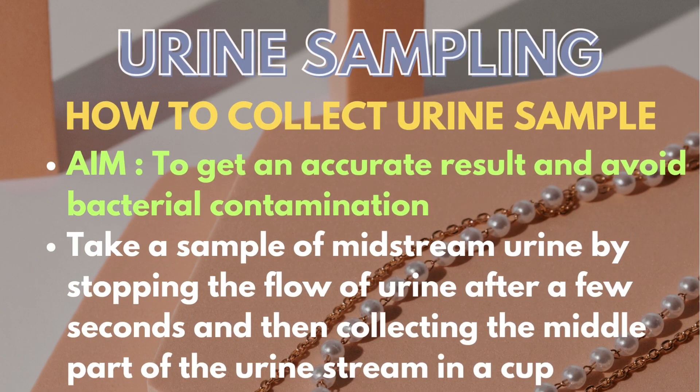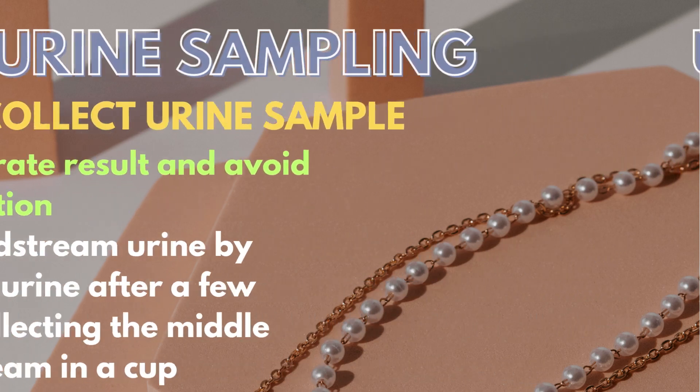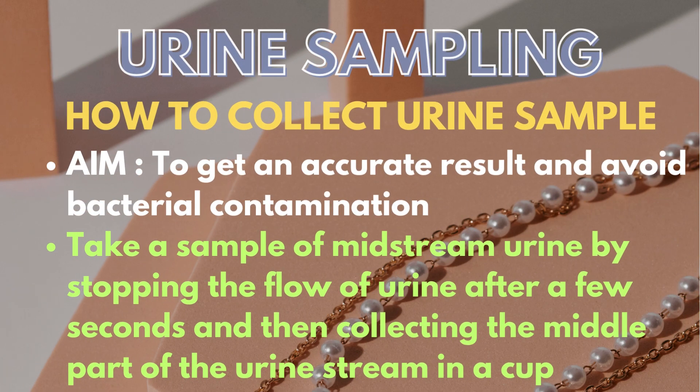To collect a proper urine sample, one's aim should be to collect and handle the sample without any contamination. One must take a freshly voided sample of midstream urine by stopping the flow of urine after a few seconds and then collecting the middle part of the urine stream in a cup.